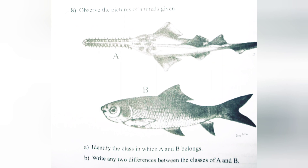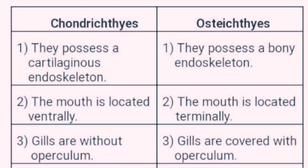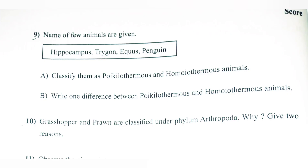Question 8: Observe the pictures of animals given. a. Identify the class to which a and b belong. Answer: a. Chondrichthyes, b. Osteichthyes. b. Write any two differences: Chondrichthyes — cartilaginous endoskeleton, mouth located ventrally, gills without operculum. Osteichthyes — bony endoskeleton, mouth located terminally, gills covered with operculum.